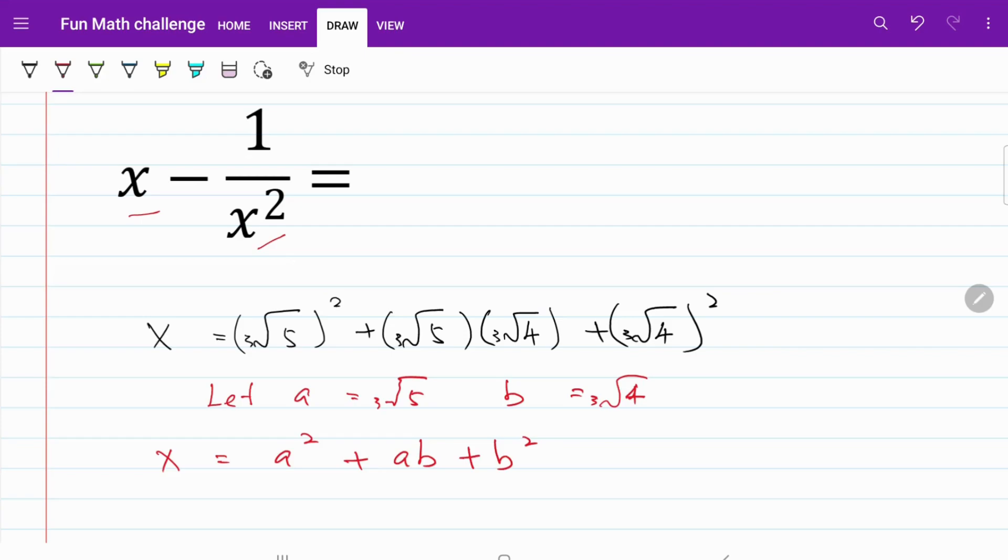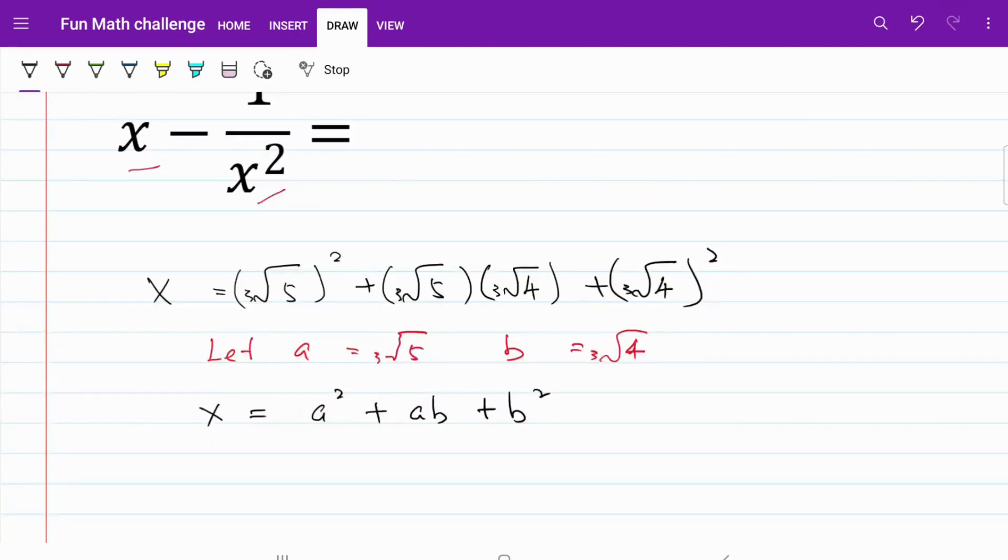For the next step, we are going to make use of the formula for the difference between two cubes. The difference of two cubes can be stated as a cubed minus b cubed is equivalent to a minus b multiplied by a squared plus ab plus b squared. And that's exactly what I have for our value of x.